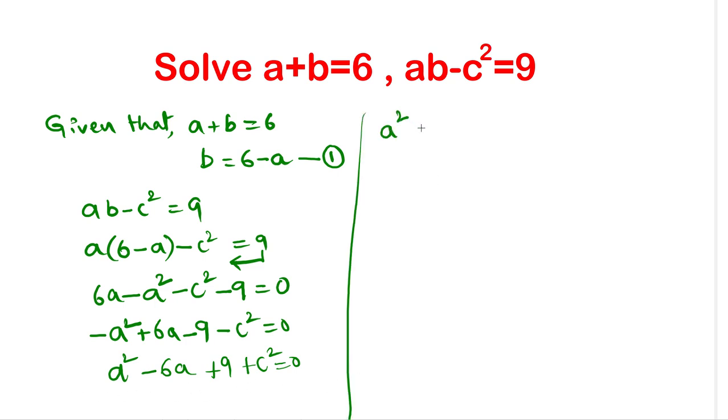We can write this as a squared, plus 9 we have, write this as 3 squared. In the middle we have minus 6a, let us write that as 2 times a times 3, plus c squared equal to 0.